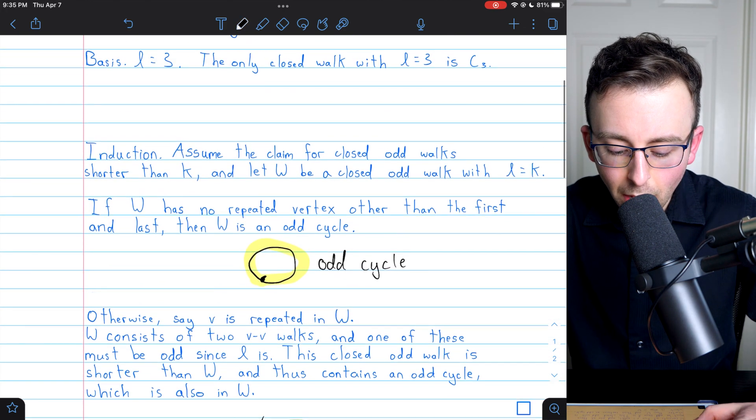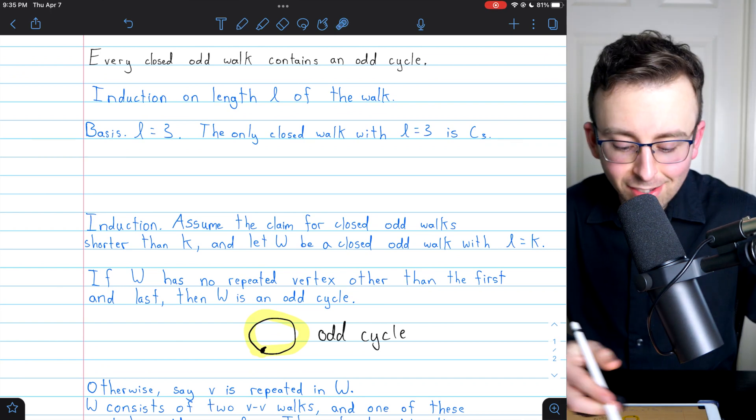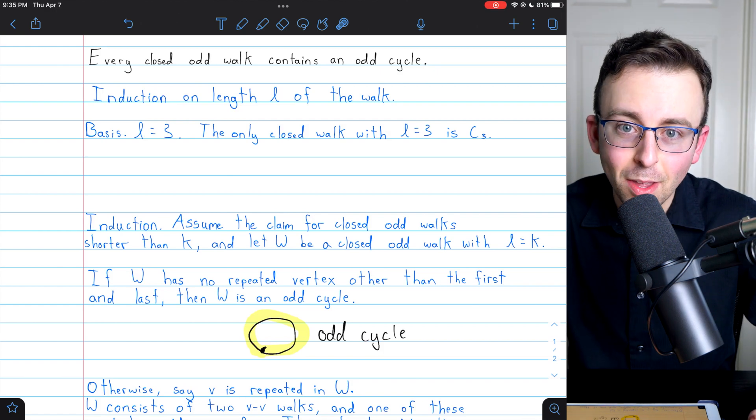Hope it made sense. Let me know if you have any questions or requests down in the comments. Once again, every closed odd walk contains an odd cycle, and that's how you prove it.